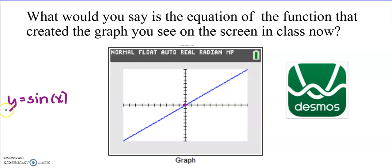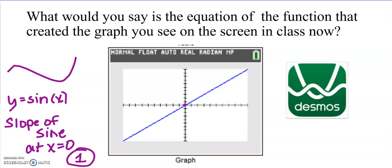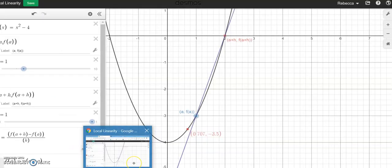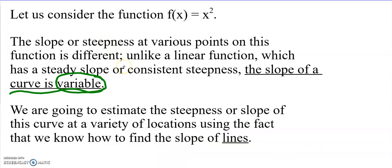And so what we found is that the slope of this graph at zero is one. That's only at zero though. We know that a sine curve, its slopes are going to change depending on where you are along the curve. So that's really what the whole first part of calculus is going to be about, is that the slope or steepness at various points on a function is different. Unlike a line which has a steady slope or consistent steepness, the slope of a curve is variable. Therefore, when we talk about the slope, there's going to be a variable in it. If we're not talking about a specific location and we're talking about the slope of a curve in general, we should see something that varies. So we're going to estimate the steepness or slope of the curve at a variety of locations using the fact that we know how to find the slope of lines. So that's what you did when you built your Desmos activity and you filled in all of the different slopes for what was going on at negative three, negative two, negative one, zero, etc.